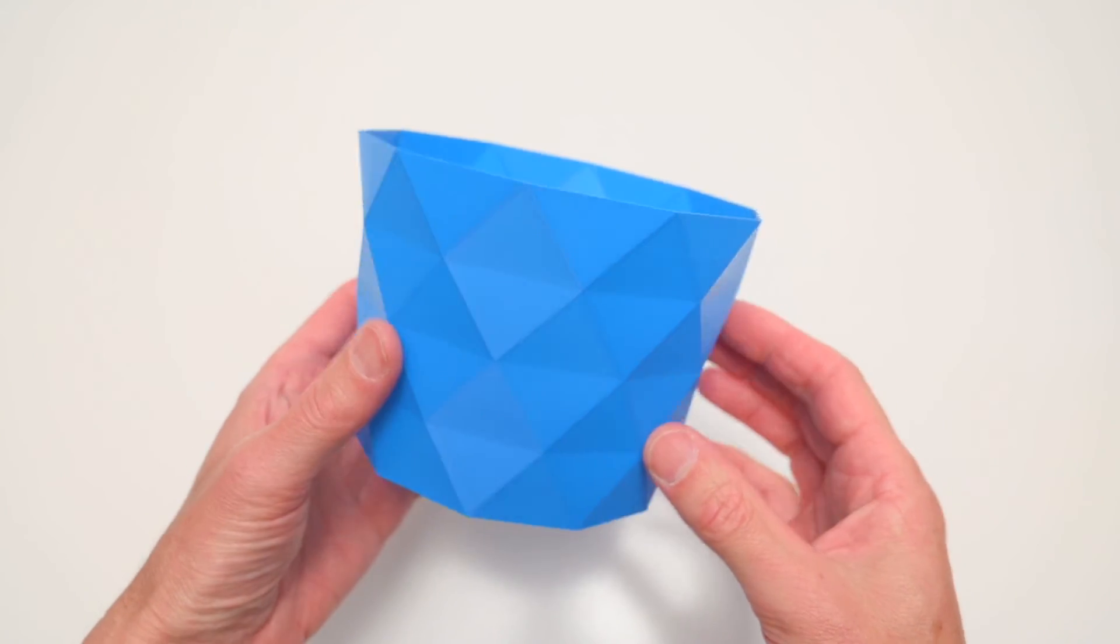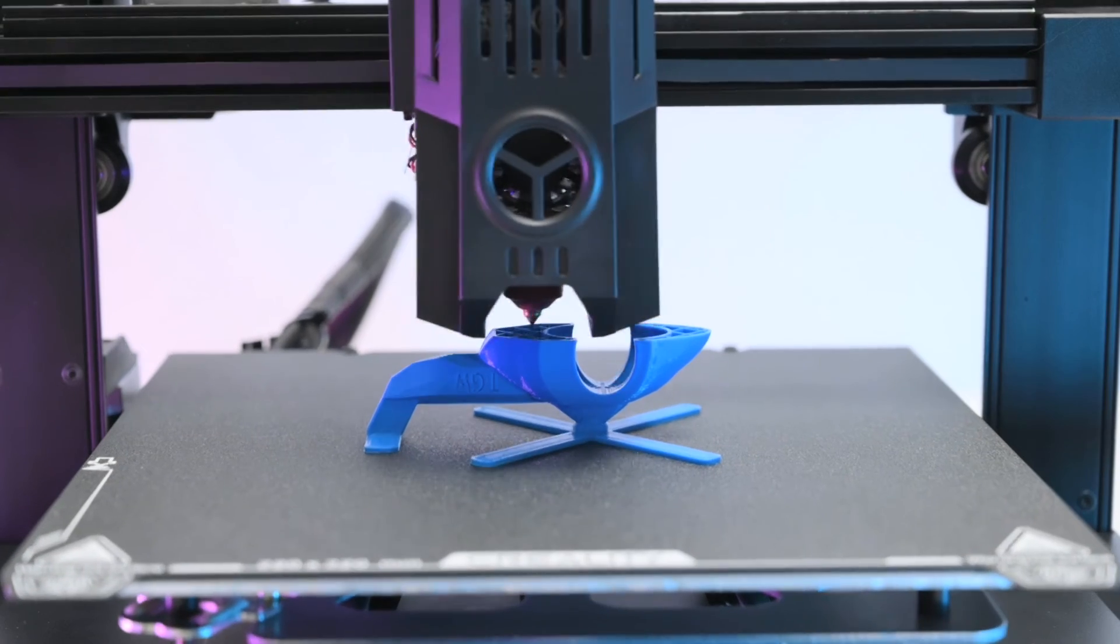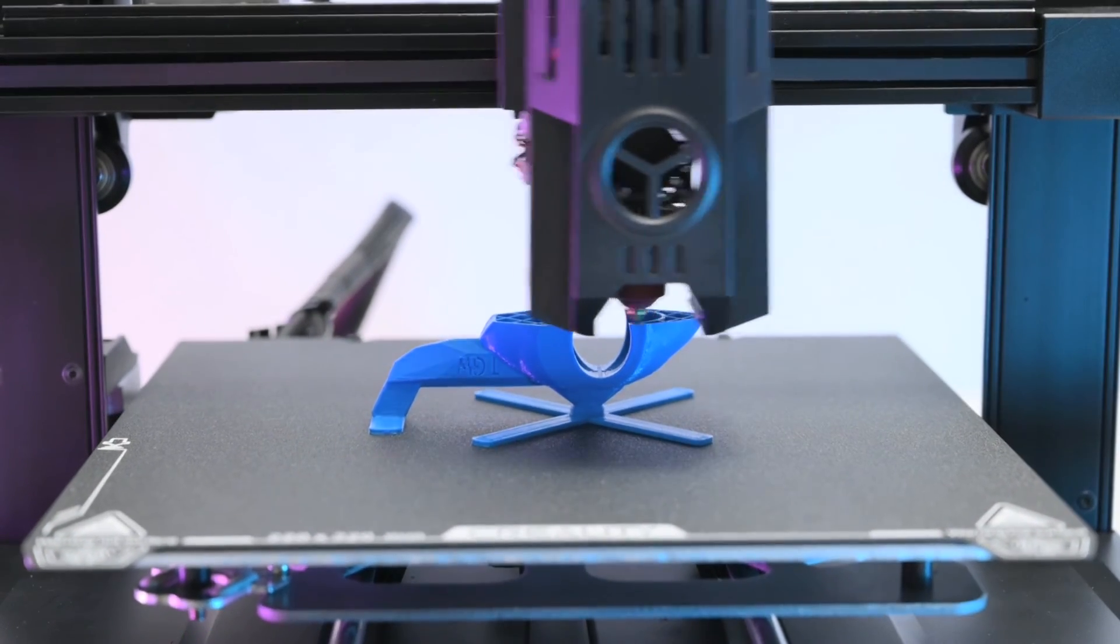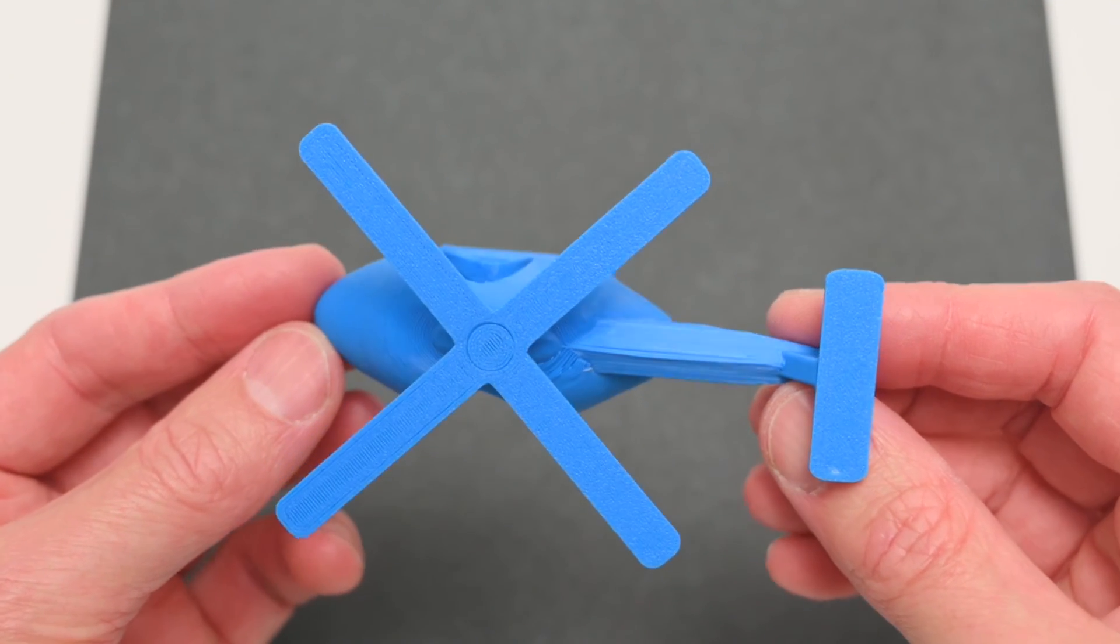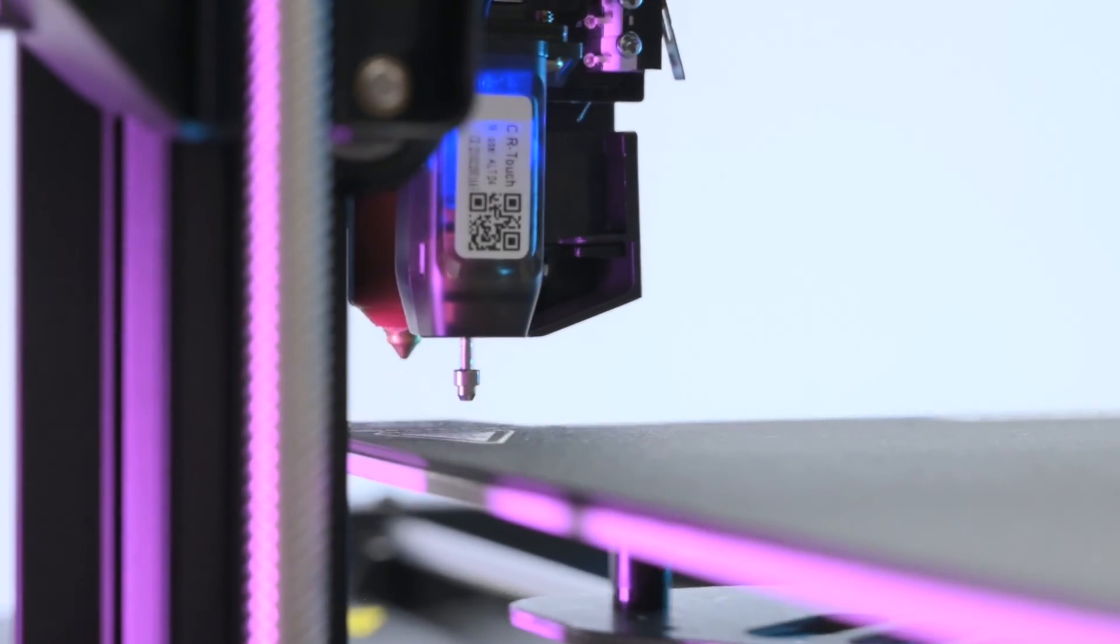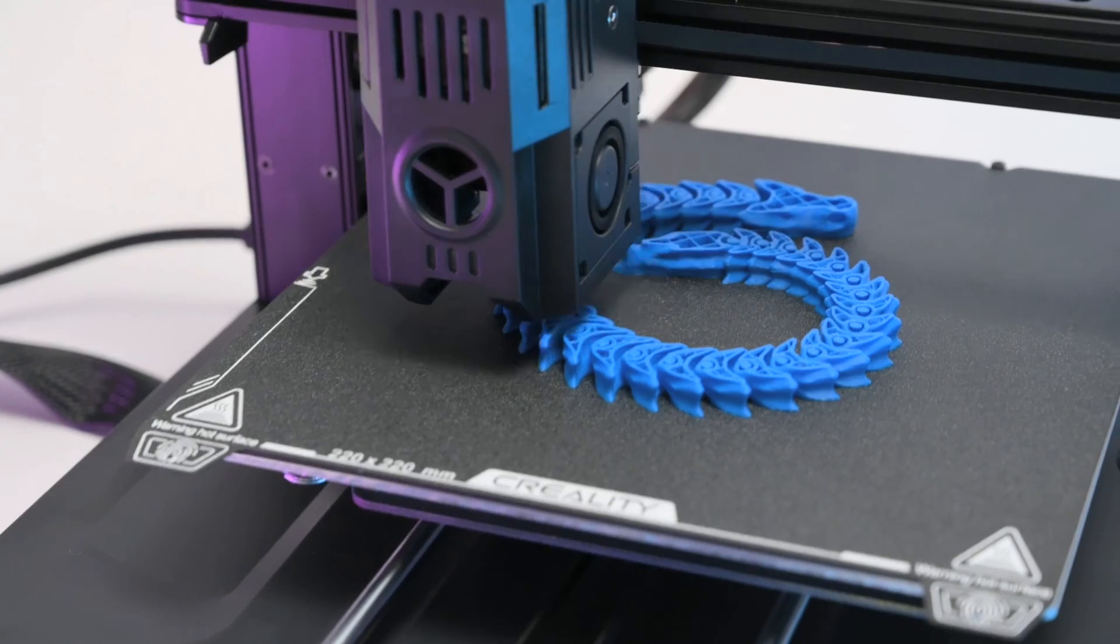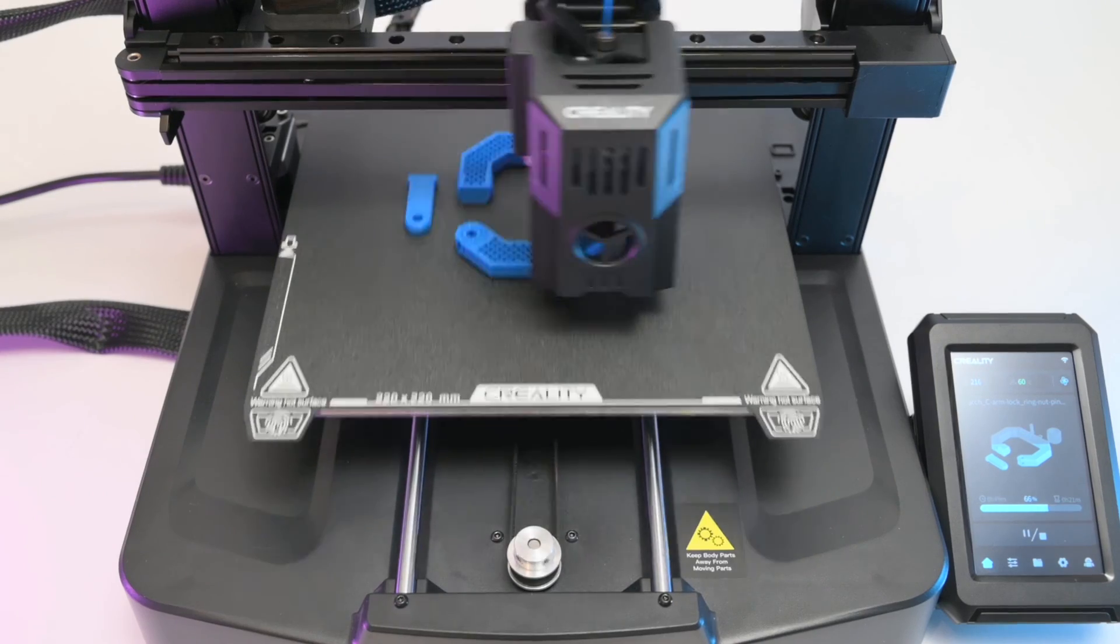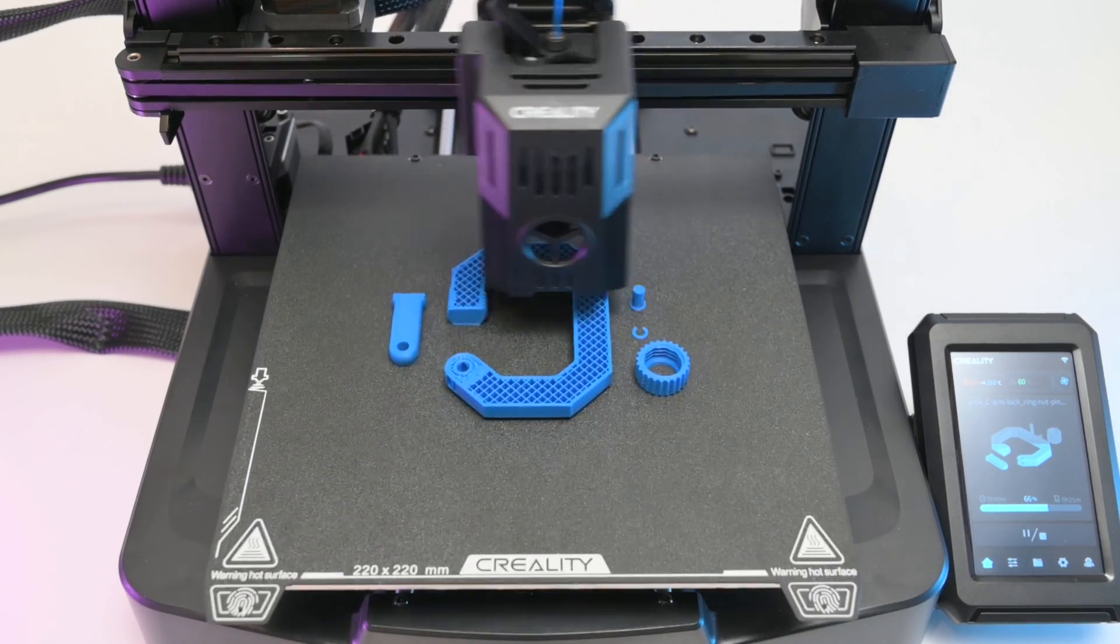The Ender 3 V3 KE is well suited for beginners looking for an entry level machine that's easy to set up and allows you to get started printing quickly. The software is easy to operate and the printer produces fast and good quality prints. For a budget printer it includes many features that are usually found on higher end models like the wifi connection, the touch screen, the hands free auto bed level system, a sprite direct extruder and its quick printing speeds. The Ender 3 printers have been an extremely popular range of 3D printers and the V3 KE continues to offer good value and it makes a great first 3D printer either for new users or if you're looking to upgrade from an older model.